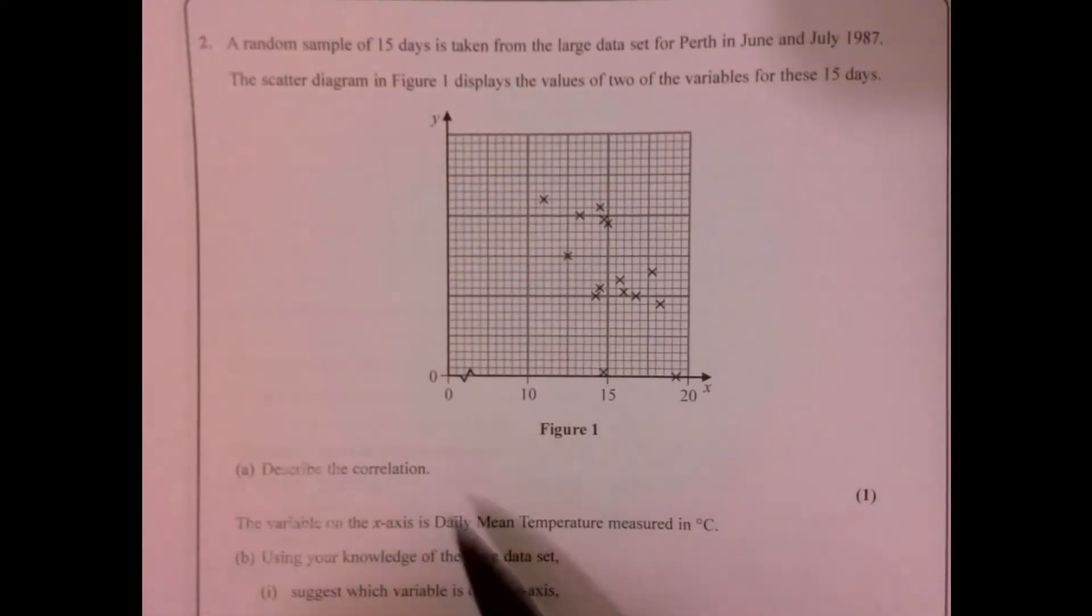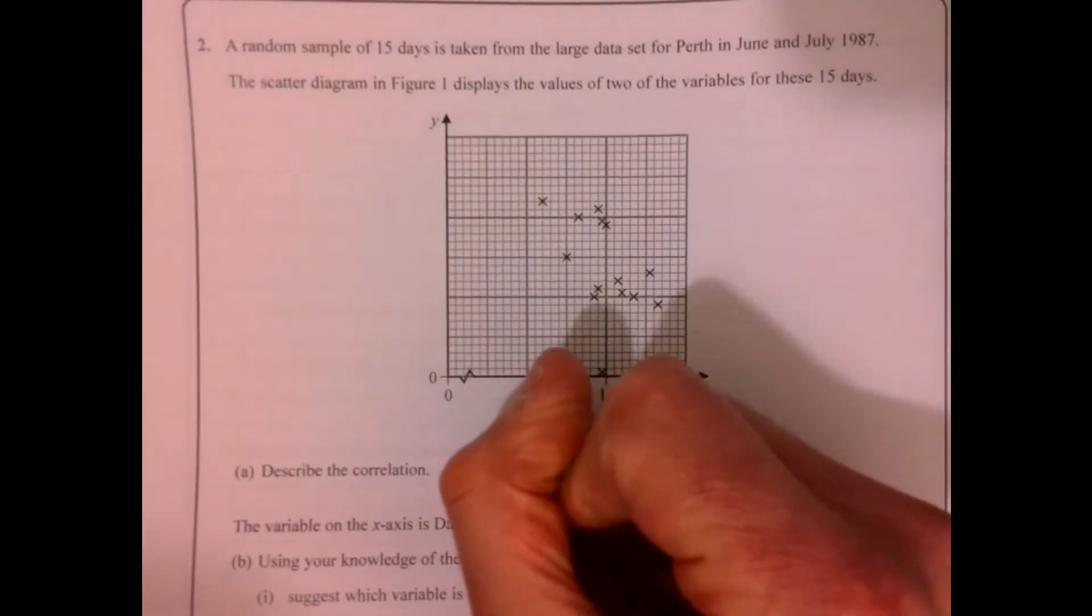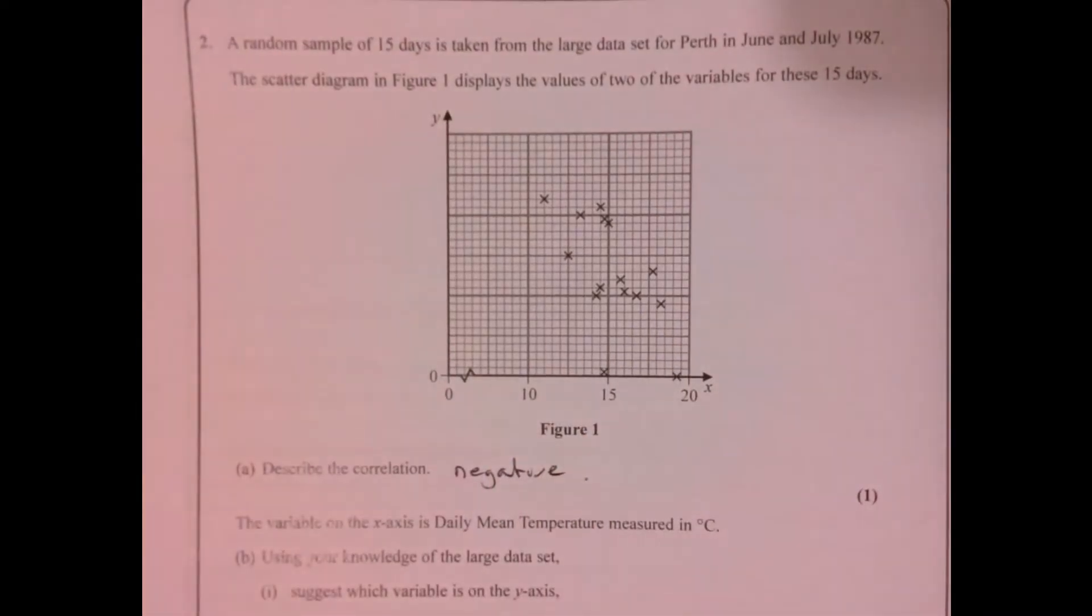Question two. Describe the correlation. Look, it's a negative correlation, it's going that way. So there we go, it's a negative.